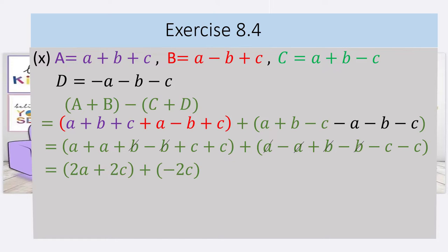Now the first expression needs to be added to the second. But the second expression has a negative sign — and as you know, plus minus equals minus — so the second expression becomes minus 2c. You can see that C's expressions have opposite signs, same coefficient, same variable, so they cancel each other. What remains is only 2a.